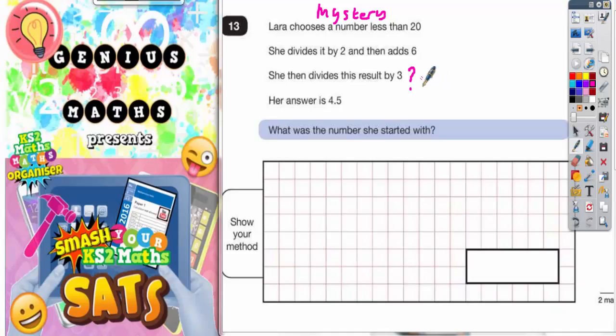Now on a series of arrows we're going to describe what she's doing to that mystery number. So the first thing she does is divide it by 2. On the first arrow let's put divide by 2. Then she's adding 6. Second arrow adds 6. This number machine is just describing what she's doing to the mystery number. Then she divides the result so far by 3. So we need another arrow with divide by 3 on it. Her answer is 4.5.